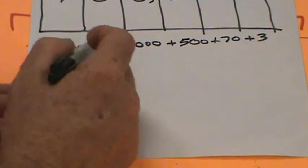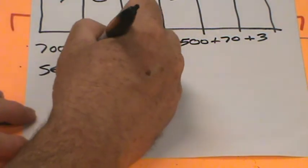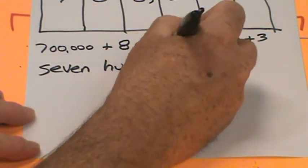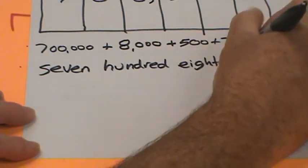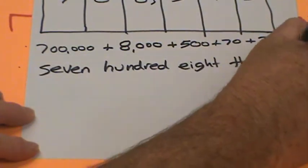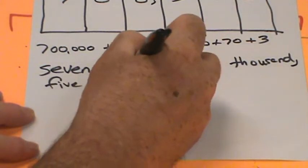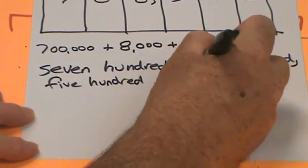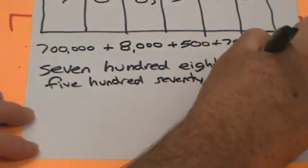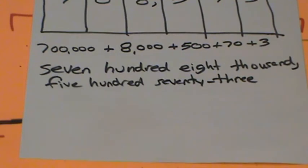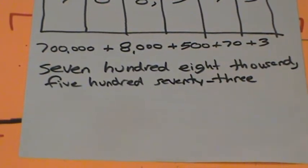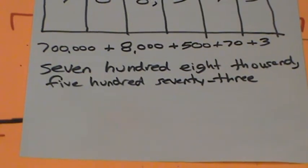Word form has words, so I write: seven hundred, eight thousand, five hundred seventy-three. Write along with me — if I'm going too fast you can always hit pause. Seven hundred, eight thousand, comma, five hundred, seventy, three. This is a very important skill — if you ever have to write out a check, sometimes you have to write it in word form: seven hundred eight thousand, five hundred seventy-three.